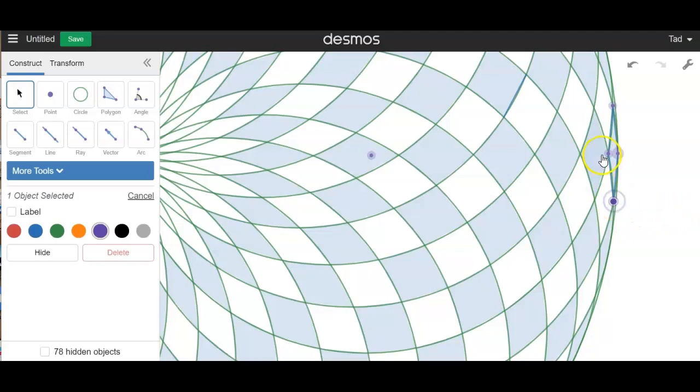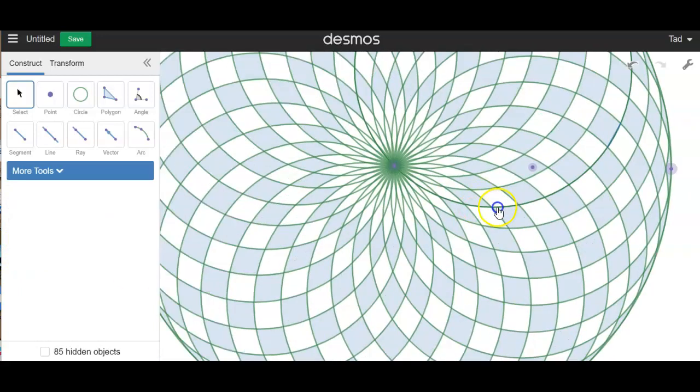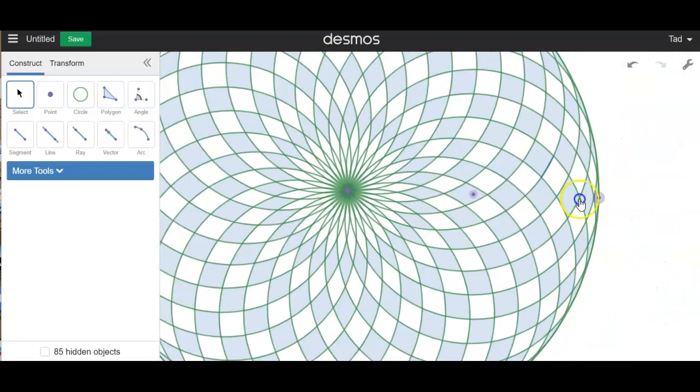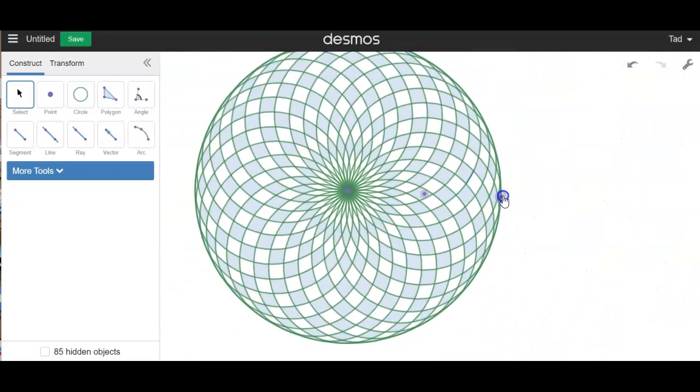And let me hide these points and these polygon edges. All right. There we go. And there is your geometric eye.